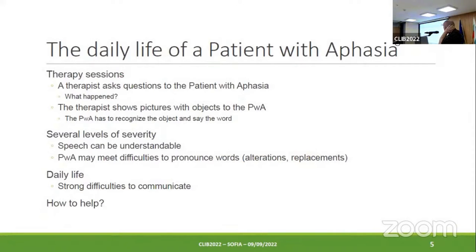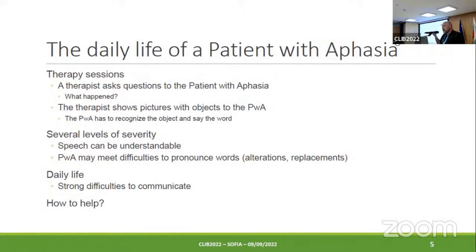What is the daily life of a patient with aphasia? This daily life involves therapy sessions where the therapist asks questions to the patient about their life, about what happened during the stroke. The therapist shows pictures of objects to the patient, and the patient is asked to recognize the object and say its name — 'this is a bottle,' 'this is a desk,' etc. There is a lot of difficulty not in recognizing the object, but in finding the word. There are several levels of severity in aphasia; the speech can be totally understandable or the patient may have only a few hesitations and a few errors.